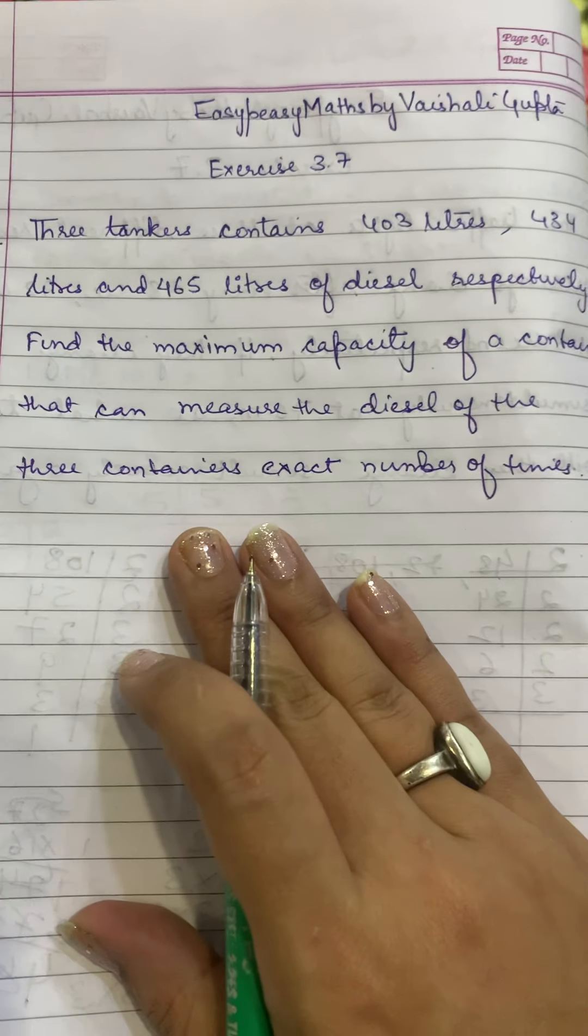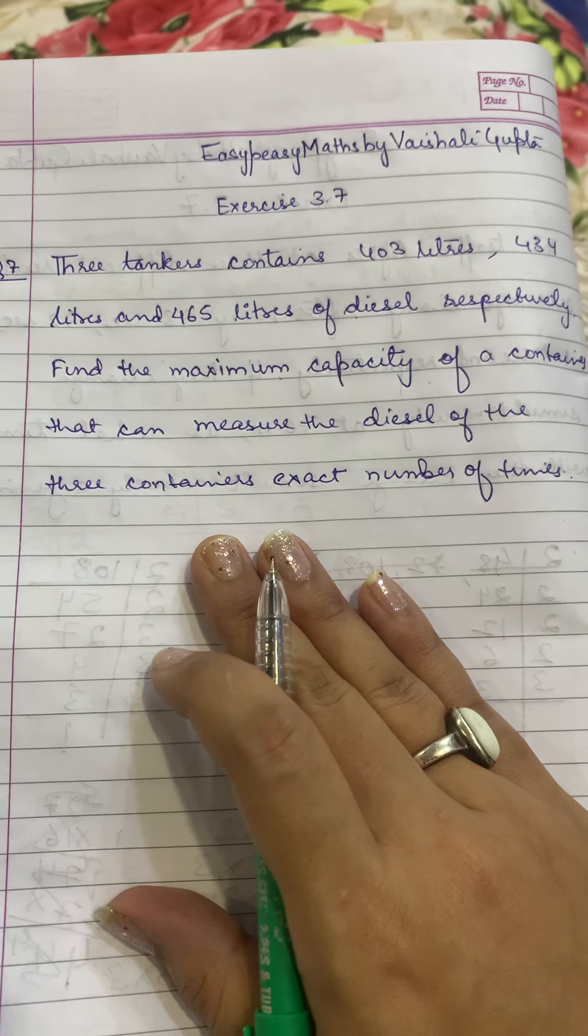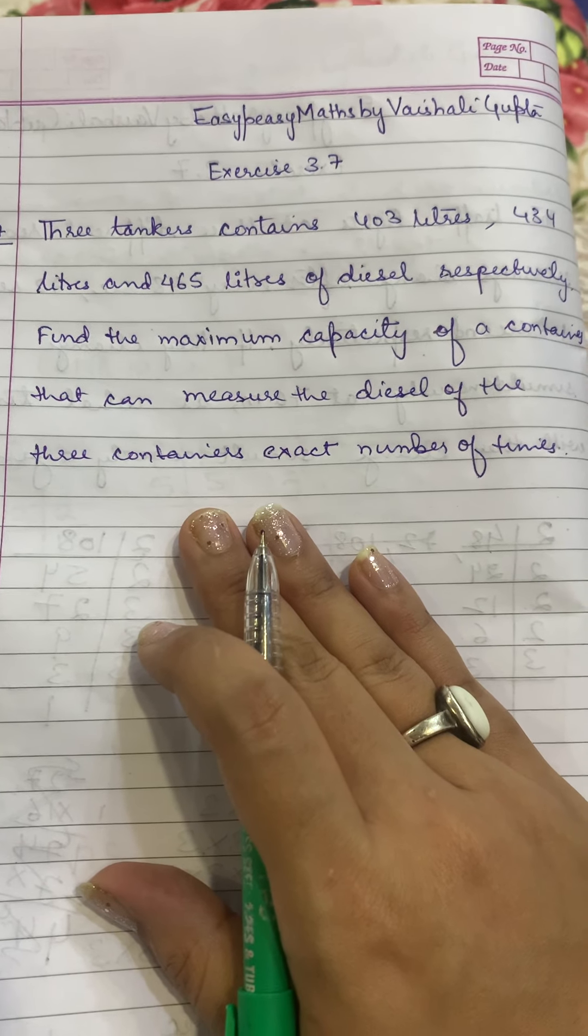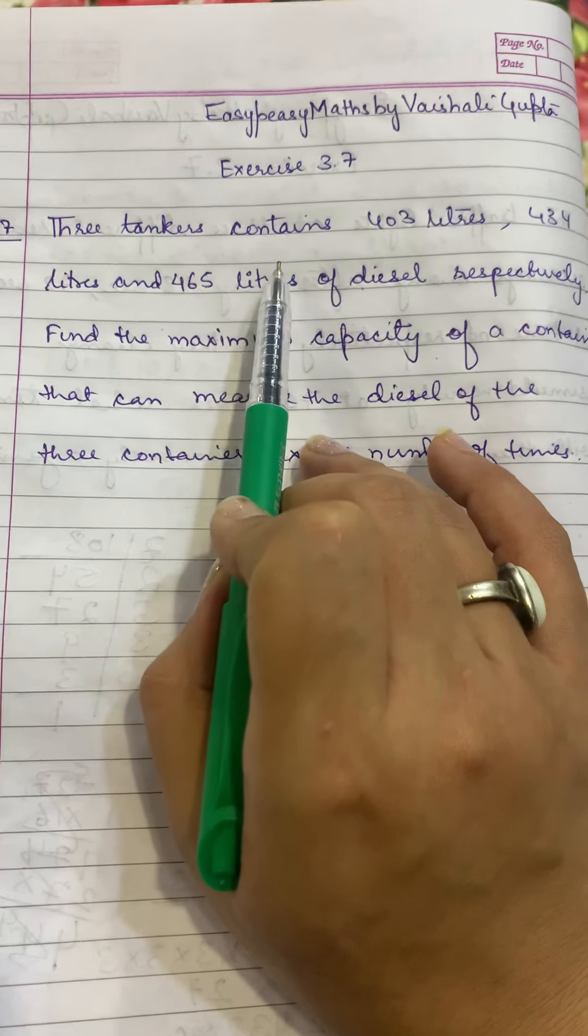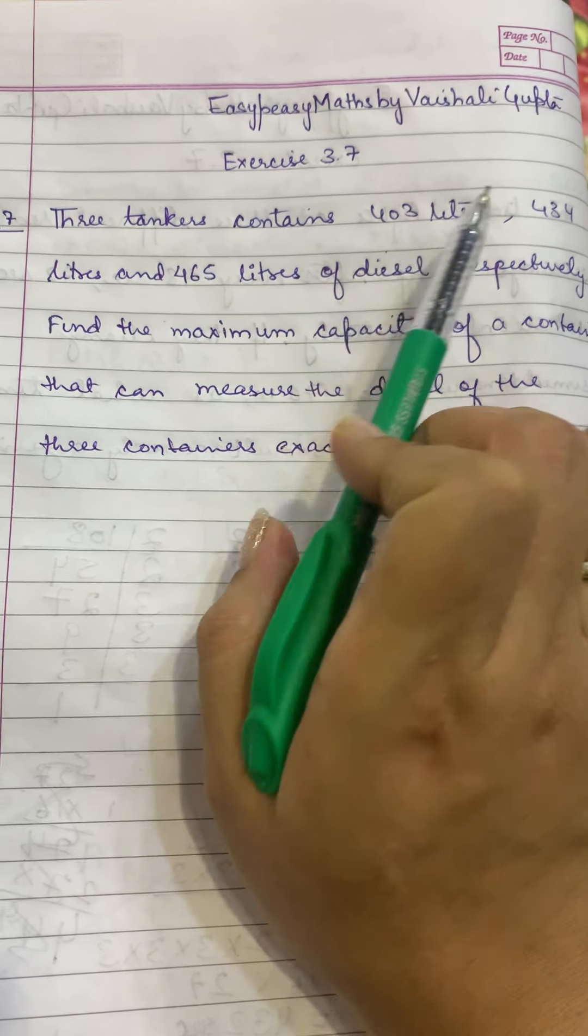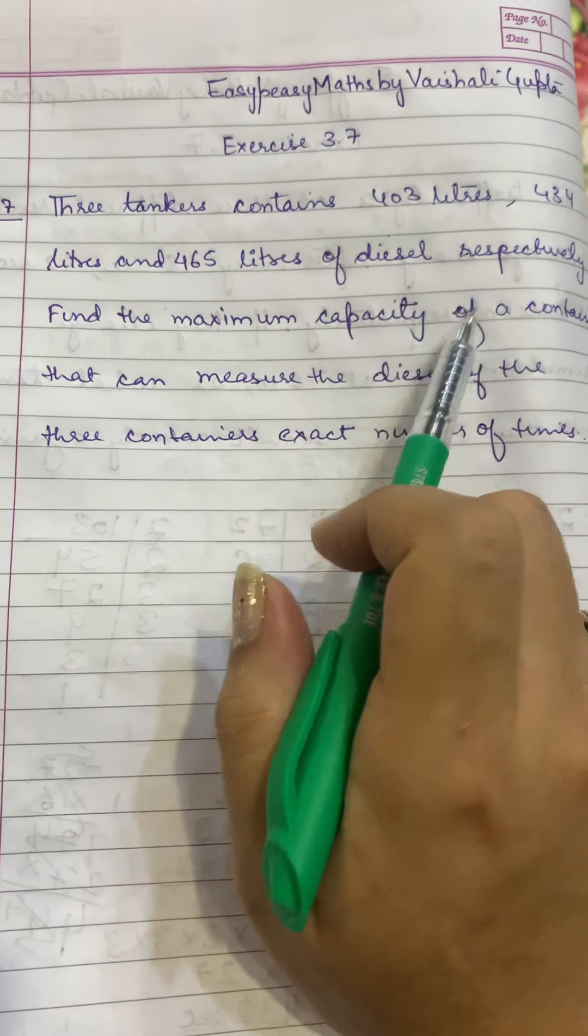Hello students, welcome to Easy Peasy Maths by Vishali Gupta. Now we are going to discuss question number 7 of exercise 3.7. The question says three tankers contain 403 liters, 434 liters, and 465 liters of diesel respectively.